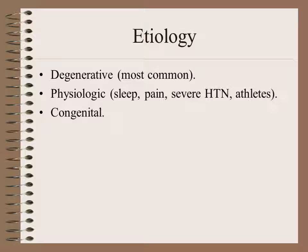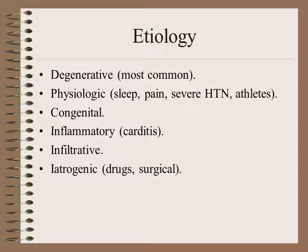Congenital complete heart block can occur in babies of mothers with autoimmune disease; usually the patient is tolerant to bradyarrhythmia and pacemaker implantation will occur in early adulthood. Inflammatory carditis occurring in autoimmune carditis or viral myocarditis is another cause. Infiltrative heart disease like hemochromatosis and amyloidosis is also a cause of heart block and bradycardia. Iatrogenic bradycardia can occur by prescribing medications which slow the heart rate or induce heart block, like beta blockers, calcium channel blockers and digoxin.